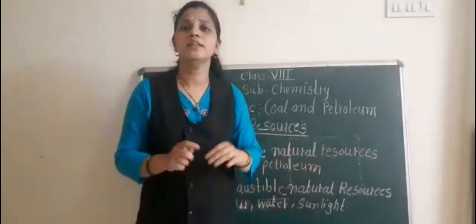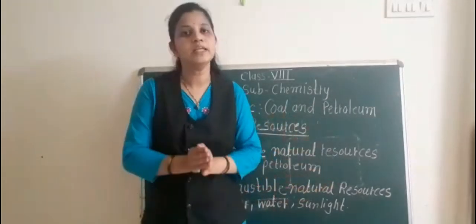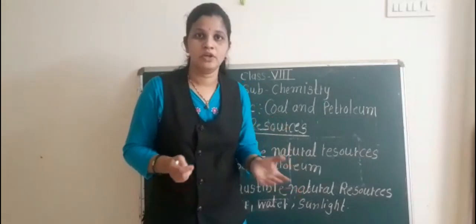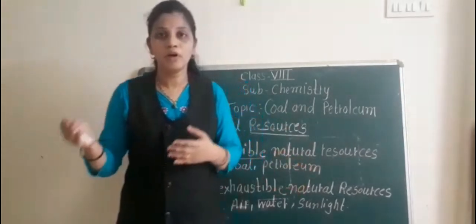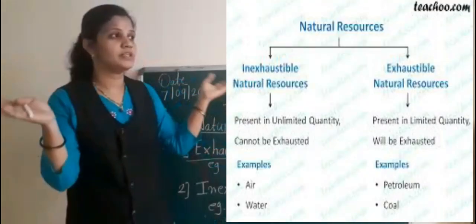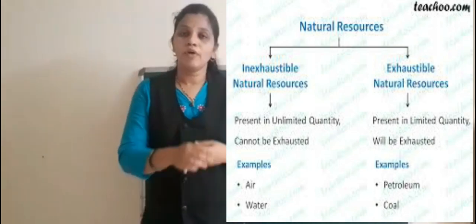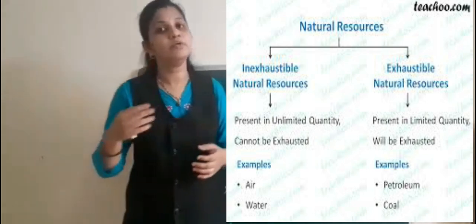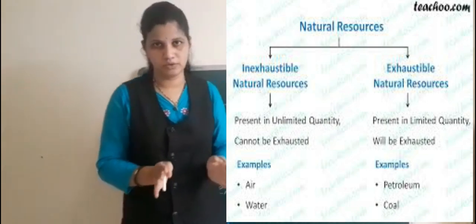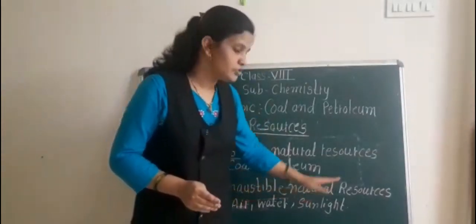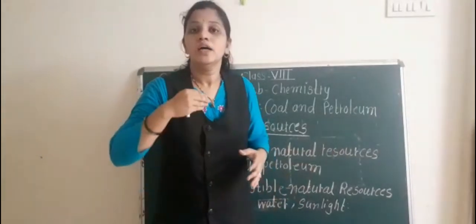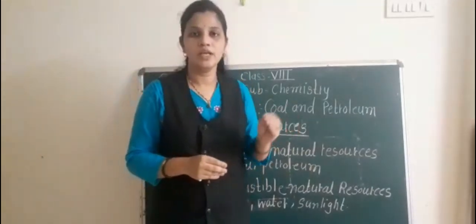The second type is inexhaustible natural resources. These are present in unlimited quantity and will not be finished or exhausted. For example, sunlight, air, water. See, air is present in our surroundings — whatever you use, it will not be exhausted, because it is present in unlimited quantity. So inexhaustible natural resources means those resources present in unlimited quantity that will not be exhausted.